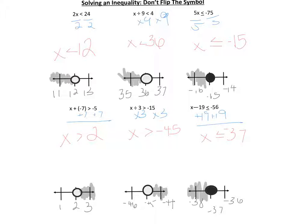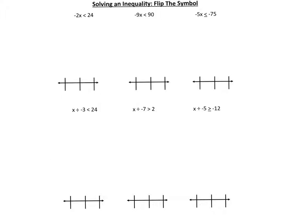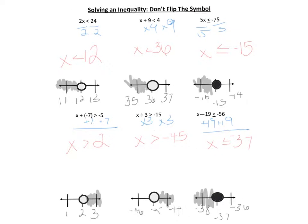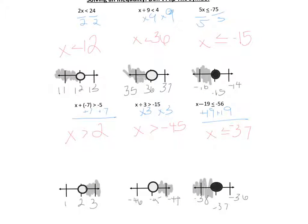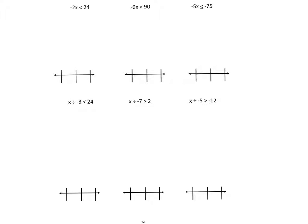Now let's take a look at some examples where we will flip the symbol. On the previous page, notice that no number multiplied or divided with the variable was negative: 2x had positive 2, x divided by 9 had positive 9, 5x had positive 5, and the addition and subtraction problems wouldn't require a flip. In each of these new examples, the number that's multiplied or divided with the variable is negative — that's what tells us to flip it.